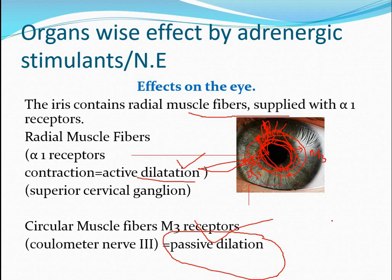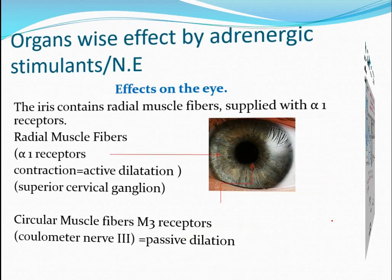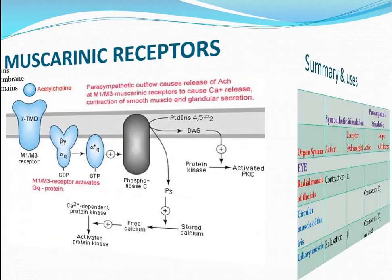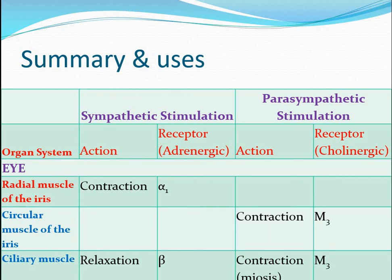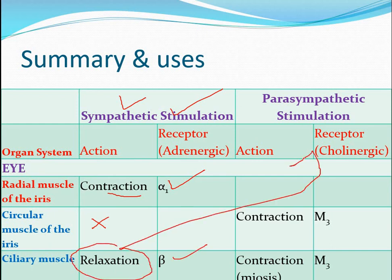These agents are used by ophthalmologists to dilate the pupil for proper ophthalmological examination of the nerve or internal damage. In summary: radial muscle fibers of the iris respond to sympathetic nervous system stimulation via alpha-1 receptors, producing contraction. Circular muscle fibers are not innervated by the sympathetic division, however the ciliary muscle fibers are supplied with beta receptors, and stimulation leads to relaxation.